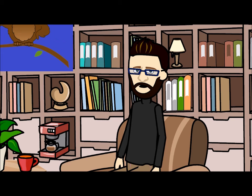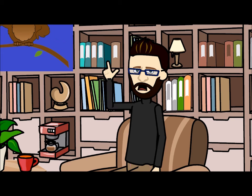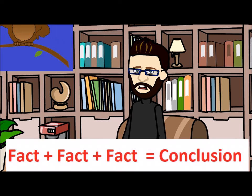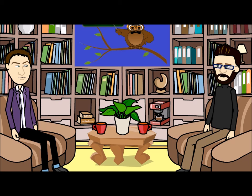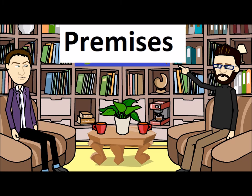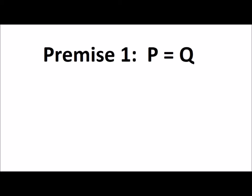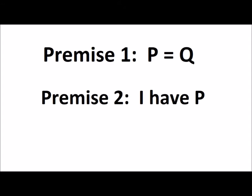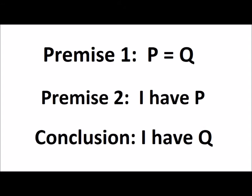Logical reasoning is the way philosophers and scientists argue in order to determine a specific conclusion from a number of facts or statements. Logical reasoning tends to be done by following a set of premises which will lead you to a specific conclusion. For example, premise one: P equals Q. Premise two: I have P. So conclusion: I have Q.